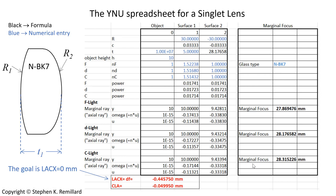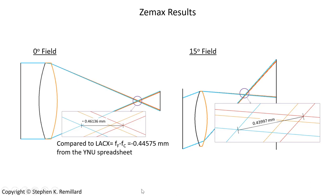The reason for doing this in Excel is to understand what's happening under the hood in more expensive lens design software, and to understand what the operands for the aberrations mean numerically. Let's benchmark what we just did against lens design software. In Zemax with the same setup — 30 mm and minus 30 mm radii in NBK7 glass — F light, which is blue, focuses before C light, which is red, giving an axial color of minus 0.46136 millimeters. We calculated minus 0.44575 millimeters with our spreadsheet. The discrepancy is most likely in the dispersion data used in Zemax versus the data I looked up.